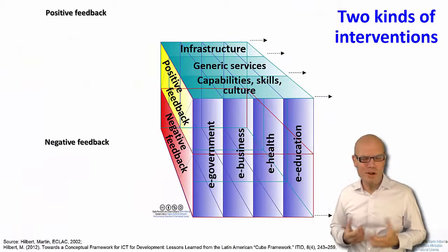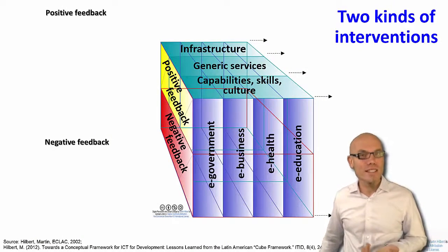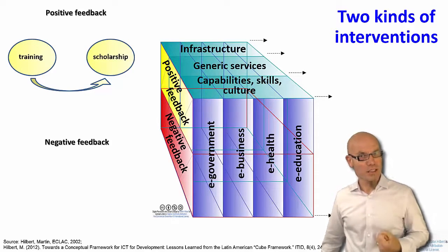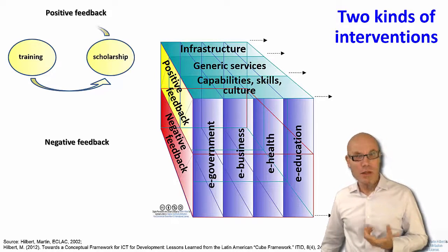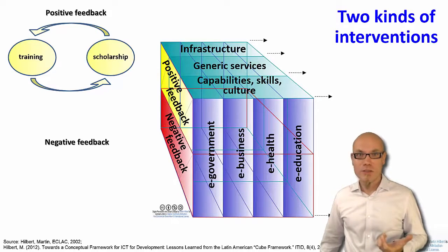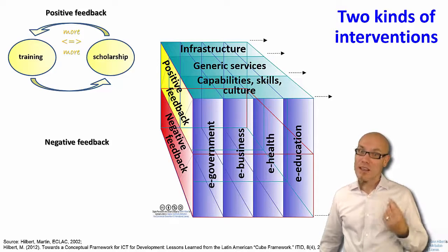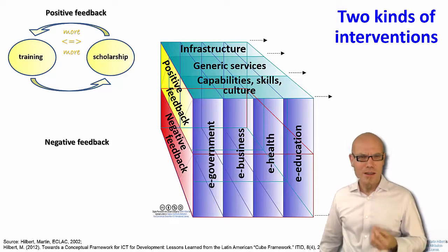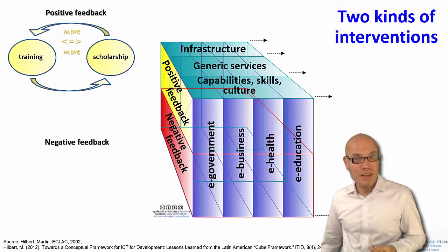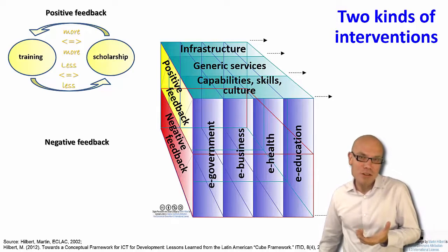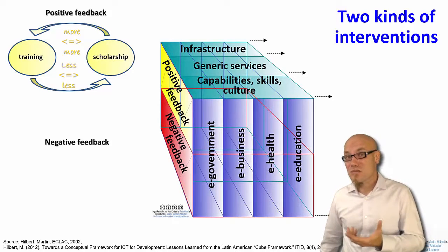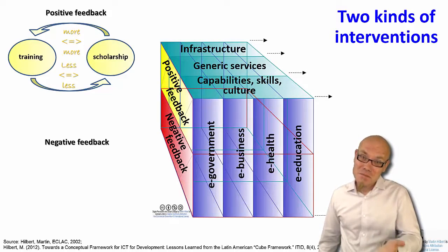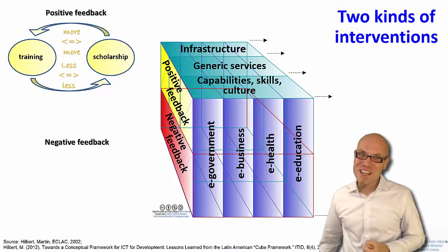Let's look at two examples relevant for the field of digitalization. If you have a lot of training, you increase your chances of winning a scholarship. If you get a scholarship, you have more training, which increases your chances of getting a better scholarship, which then increases your training — a positive runaway dynamic. On the other hand, if you start with very little training, you may not win a scholarship, which means less training, less chance of winning, and it goes downward — less becomes less becomes less.